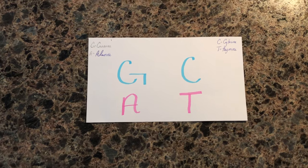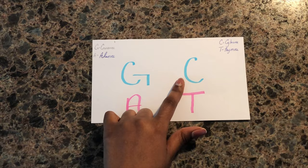To start off, we have four nitrogenous bases: guanine, adenine, cytosine, and thymine.